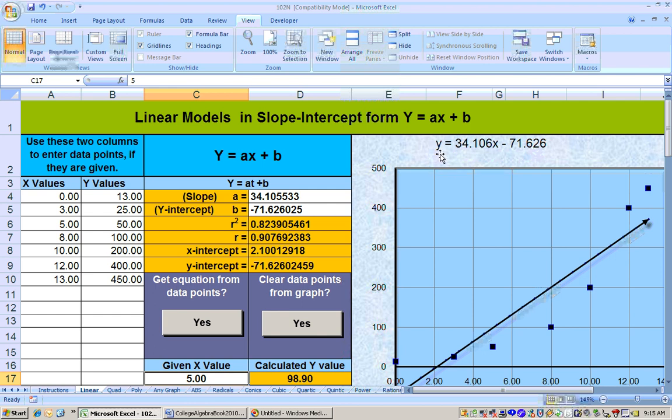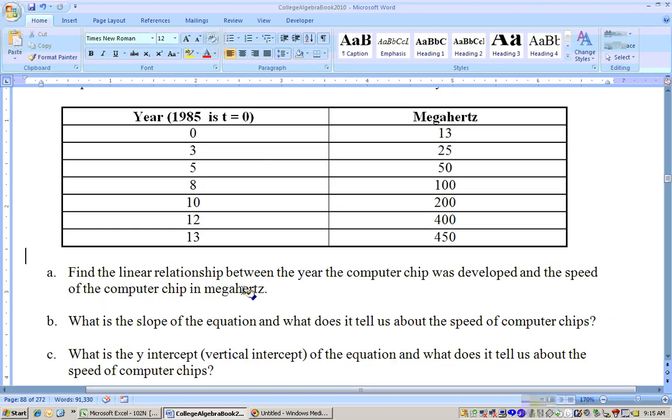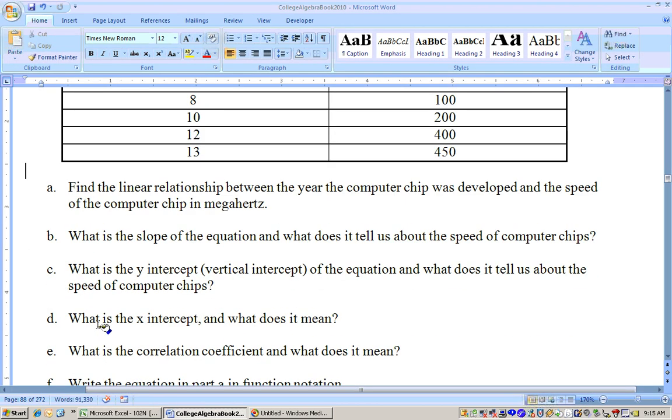The y tells us the speed of the computer, and the x is the number of years after 1985. The questions on this ask, get the linear relationship, which we did, then get the slope, y-intercept, and x-intercept, and correlation coefficient. So let's go ahead and do those.